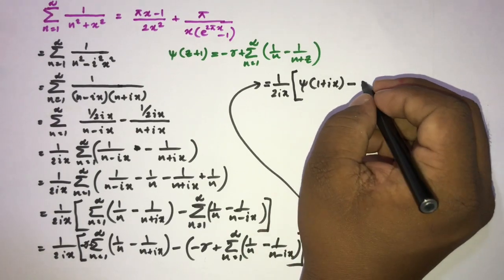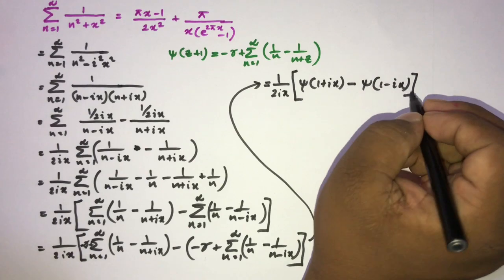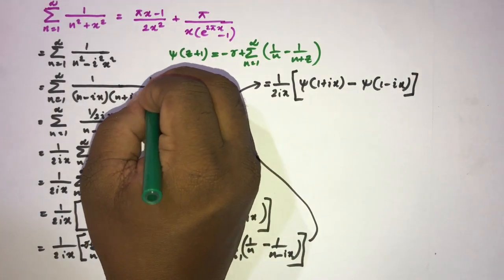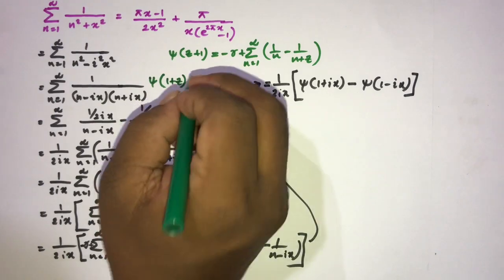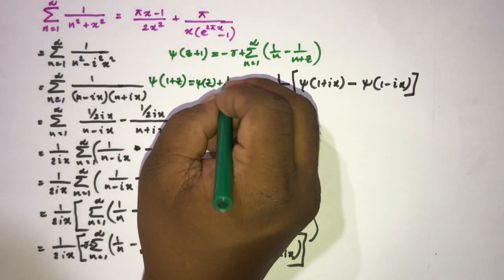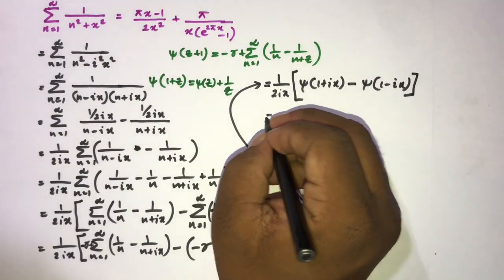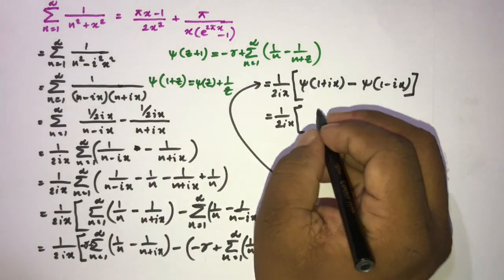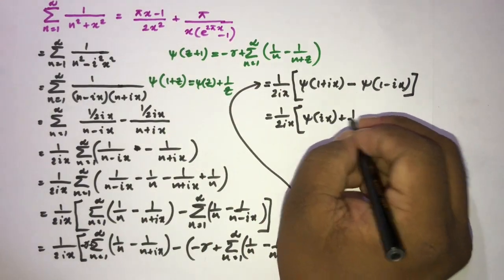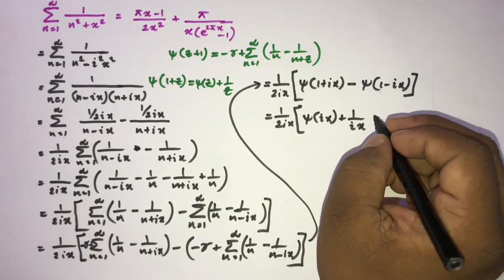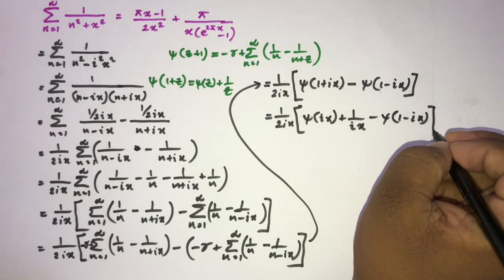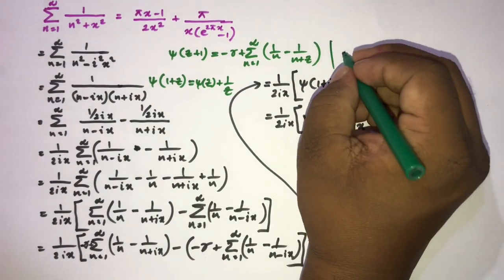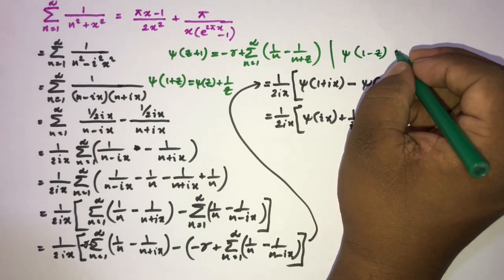So we can write the sum as (1/(2ix)) · [ψ(1 + ix) − ψ(1 − ix)]. We also know the digamma recurrence ψ(1 + c) = ψ(c) + 1/c, so ψ(1 + ix) = ψ(ix) + 1/(ix), and we substitute this in.